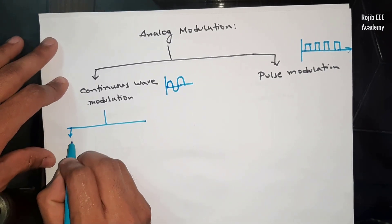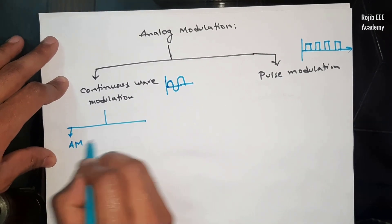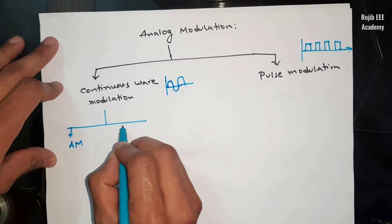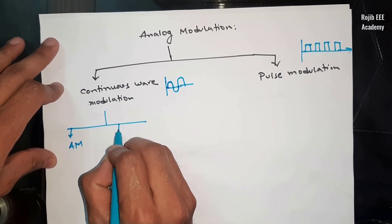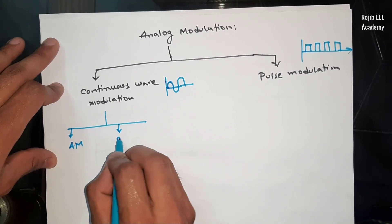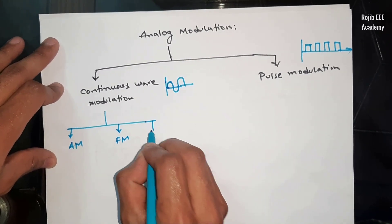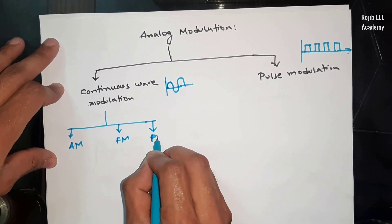Under continuous-wave modulation, we have: Amplitude Modulation (AM), Frequency Modulation (FM), and Phase Modulation (PM).